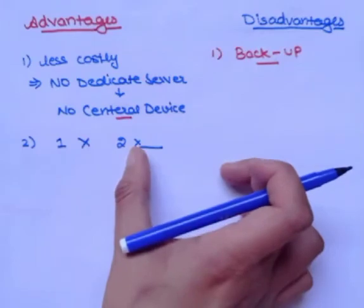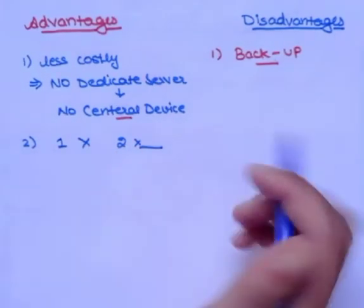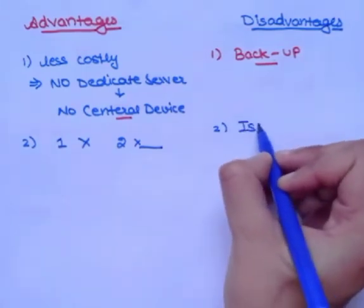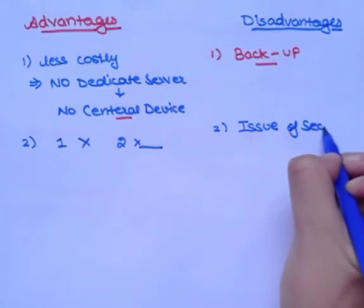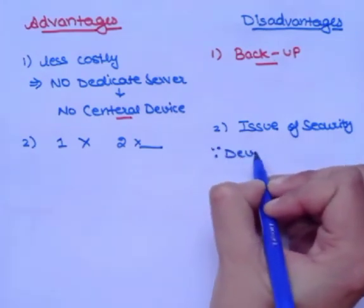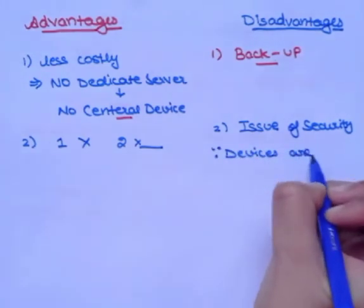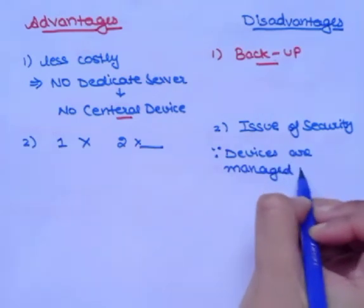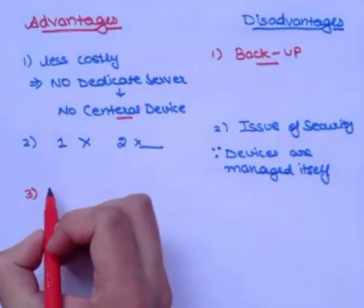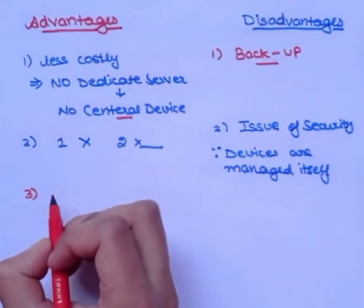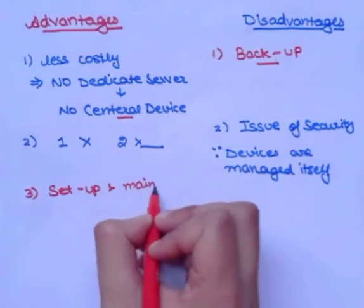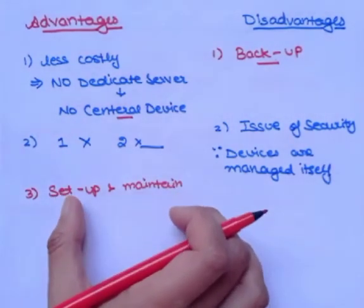Computers work individually because they are not dependent on anyone. The second disadvantage is that it has a security issue — a major issue of security, as each device manages itself. The next advantage is that it is very easy to set up and maintain, as each computer manages itself.